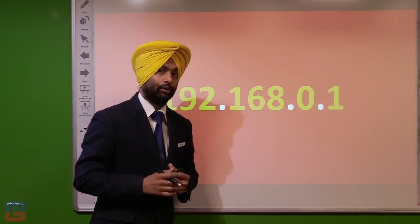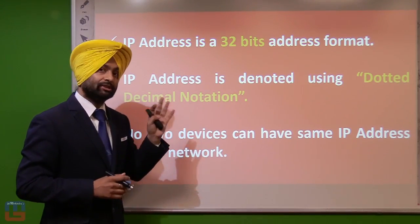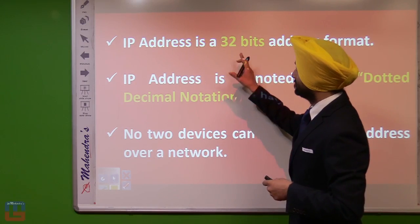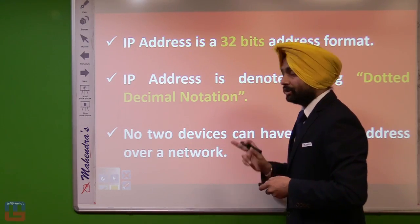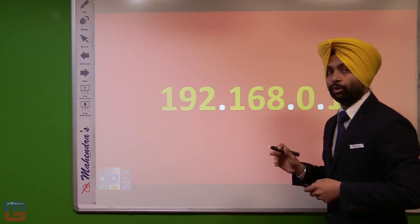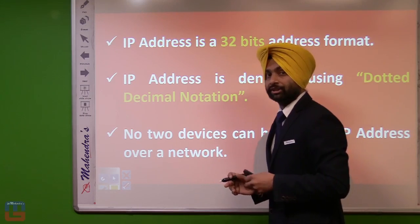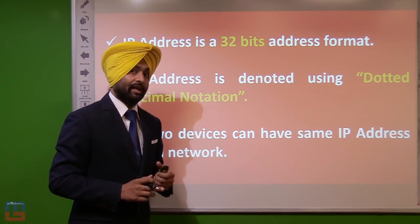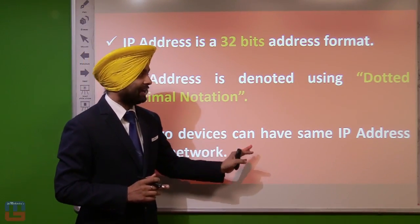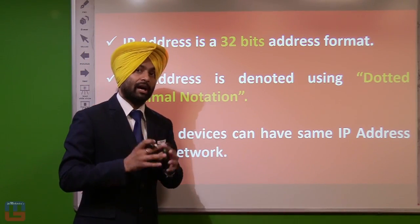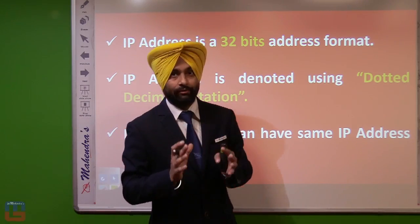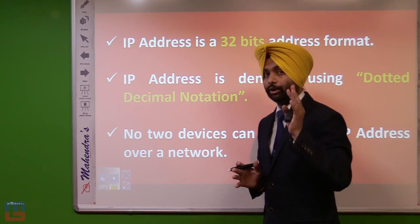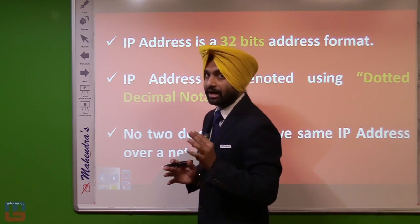When we talk about the features of an IP address, the first feature is that it is a 32-bit address format. The format is known as dotted decimal notation — an IP address is most often represented in dotted decimal notation. The last feature is that no two devices can have the same IP address on a network. No two devices located on a similar network can have the same IP address.